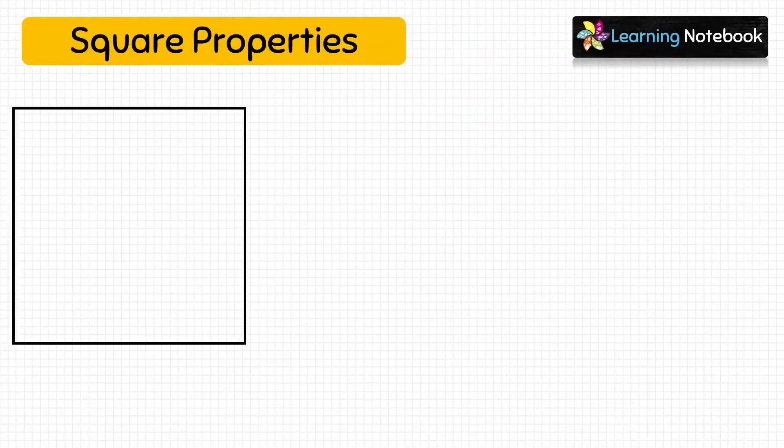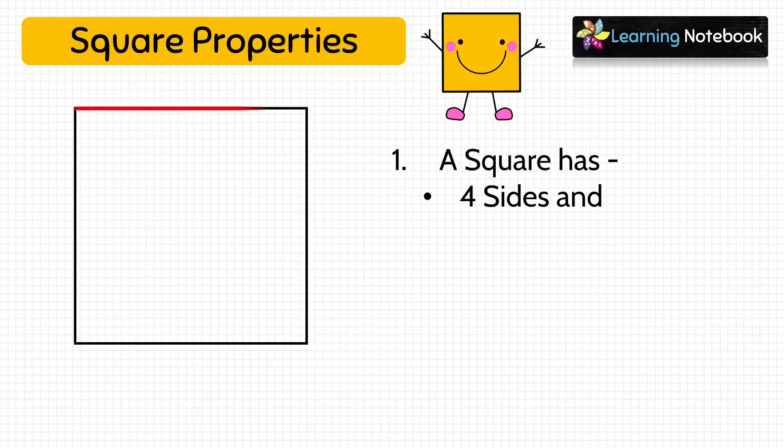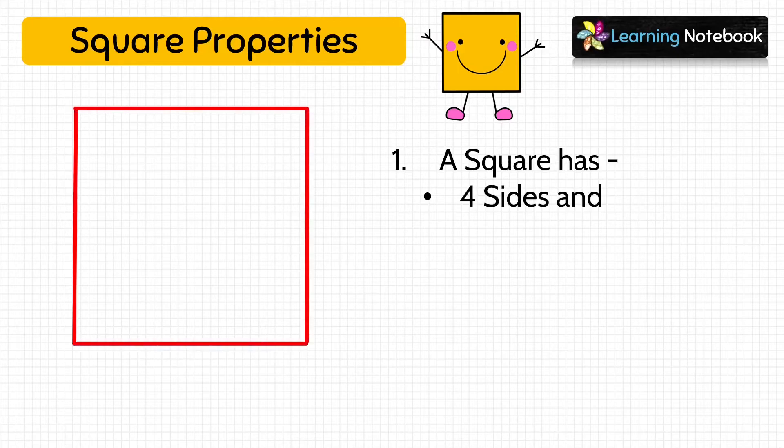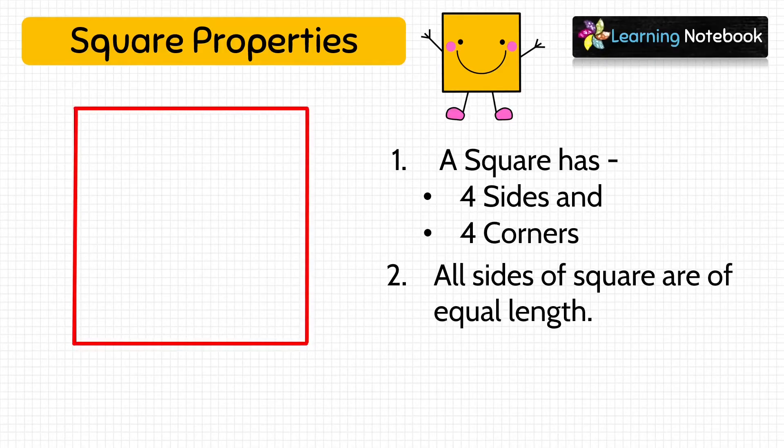Next basic shape is square. This is a square. A square has four sides and four corners. All sides of a square are of equal length.